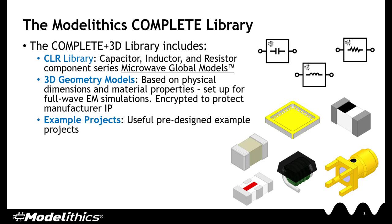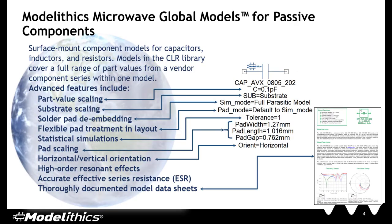Another benefit of the Model Ethics library is that it comes with example projects to help users get up and running quickly. Model Ethics Microwave Global Models are models for surface mount capacitors, inductors, and resistors. They cover the full range of part values in the component series. In addition to part value scalability, microwave global models scale with substrate as well as solder pad size, giving designers a great degree of flexibility. These models are very useful in electromagnetic simulation, as the effects of solder pads can be removed using different sim modes, allowing designers to simulate pads as part of their layout. The models are also compatible with statistical simulation and optimization, and some have the option to select mounting orientation.